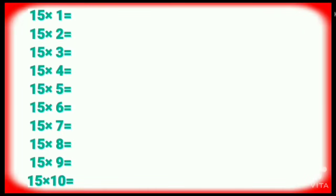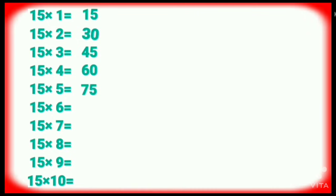Table of Fifteen. Fifteen ones are fifteen. Fifteen twos are thirty. Fifteen threes are forty-five. Fifteen fours are sixty. Fifteen fives are seventy-five. Fifteen sixes are ninety. Fifteen sevens are one hundred five. Fifteen eights are one twenty.